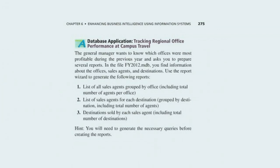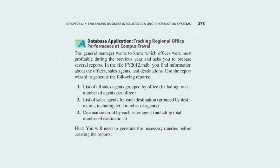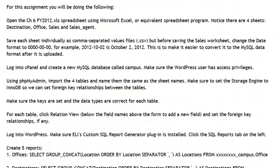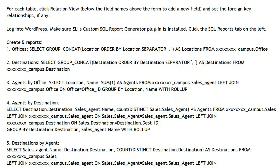Now that our database has been created, we will create a page in our WordPress website to display our reports. The original assignment wants us to list all the sales agents grouped by office including totals per office, then the list of sales agents for each destination with agent totals per destination, and finally the destinations sold by each sales agent with totals per agent. On the assignment page, I give you these queries, plus two more at the start that will just list the offices and the destinations.